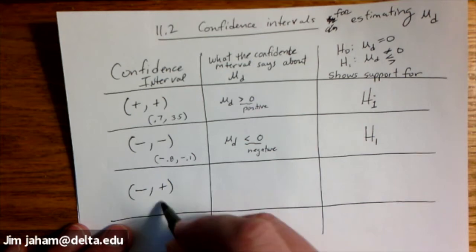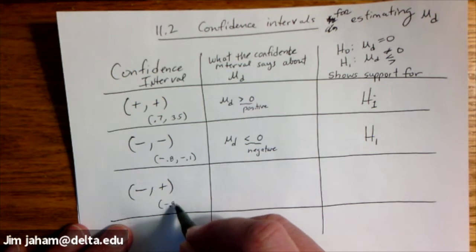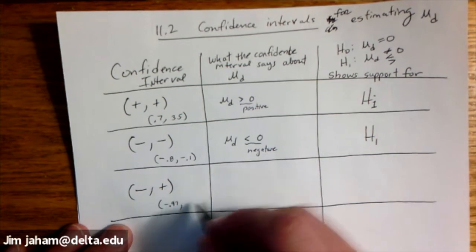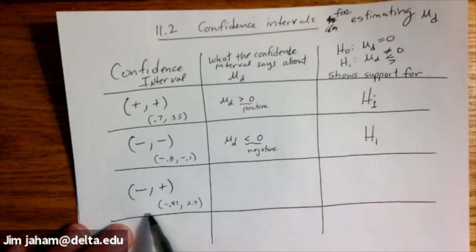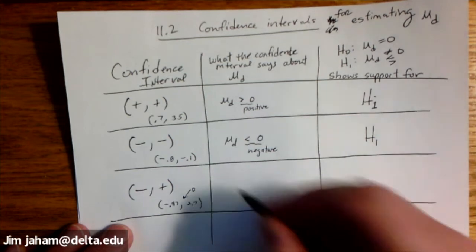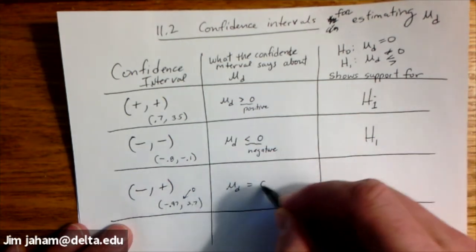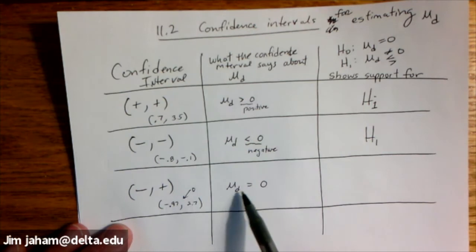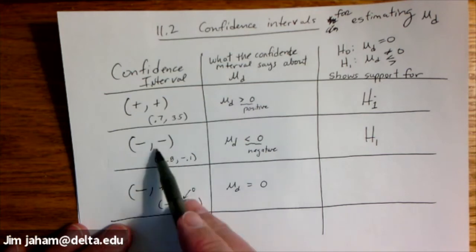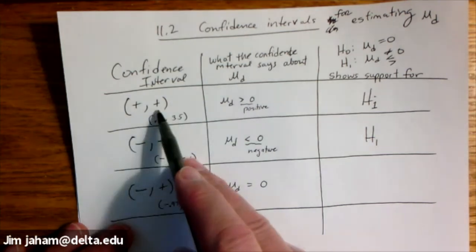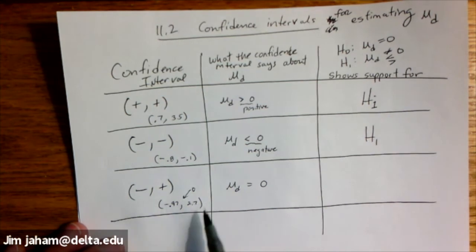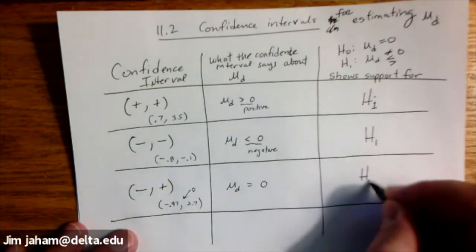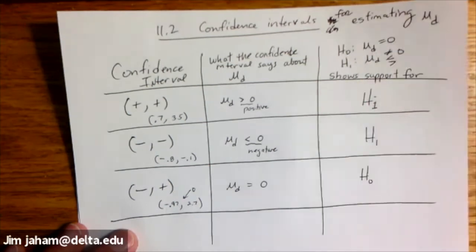And finally, the third case, if the lower limit is negative, like negative 0.97, and the upper limit is positive, like 2.7, then zero is in there somewhere in that interval. Since zero is in there, we're going to say that the mean of the differences could plausibly be zero, because zero is in that interval. Zero is not in this interval, and zero is not in this interval. It's only in this one where you have a negative number to the left and a positive number to the right. And that is going to give us evidence to support the null hypothesis.